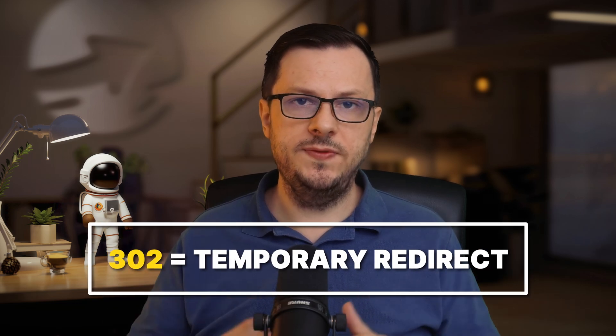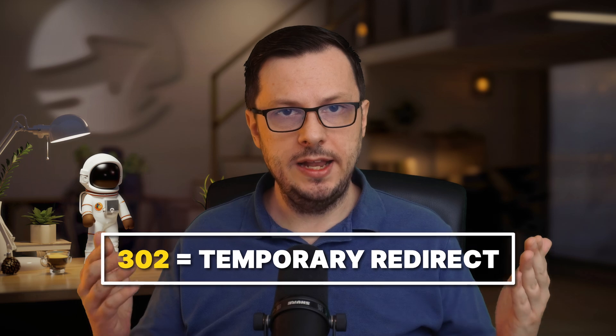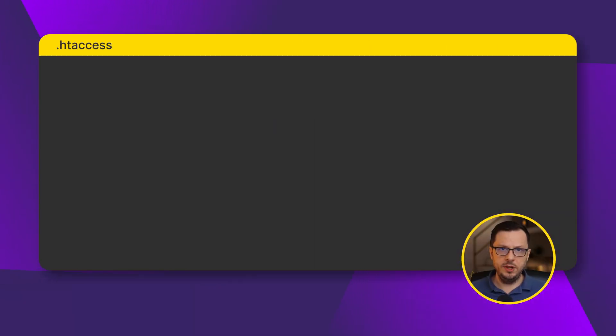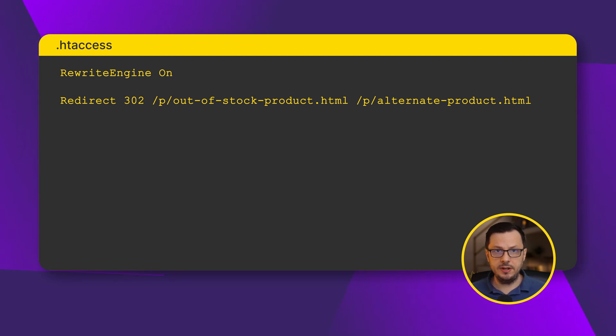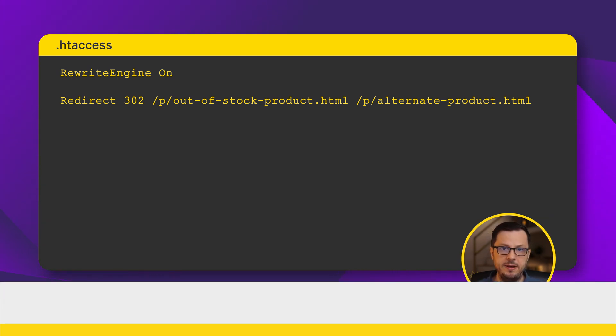Sometimes you might only want to temporarily send customers to a different product page — that's where a 302 redirect comes in. It's like saying this is just for now, but we will be back later. Maybe you have run out of a certain product and you know it will take a while to have it in stock again, so you can temporarily redirect users to a very similar product and remove the redirect when the main product is available again. You can also use this when a subcategory is temporarily out of products and redirect it to the parent category.